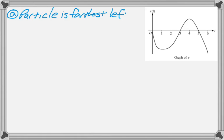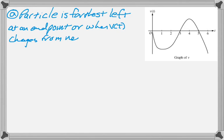We want when the particle is farthest to the left, which would be at one of the endpoints or when v(t) changes from negative to positive. That's t = 0, t = 3, or t = 6. Zero and 6 are the endpoints, and 3 is where it changes from negative to positive.